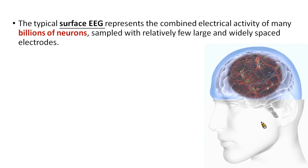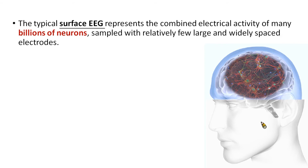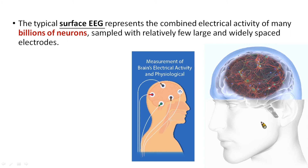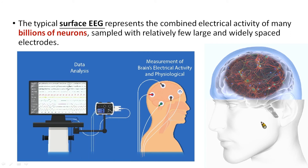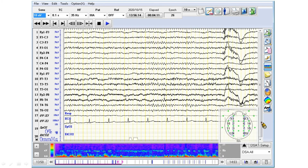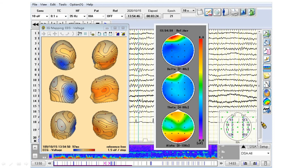The surface EEG is the most commonly used now, due to it being cheaper and convenient. The surface EEG presents the combined electrical activity of billions of neurons. The EEG electrodes collect those electrical signals, and after data analysis, we get the EEG on our EEG monitor. After further detailed data analysis, we can also get a 3D mapping EEG voltage.